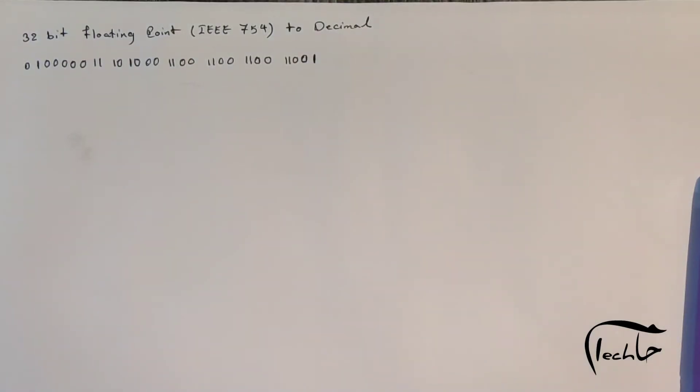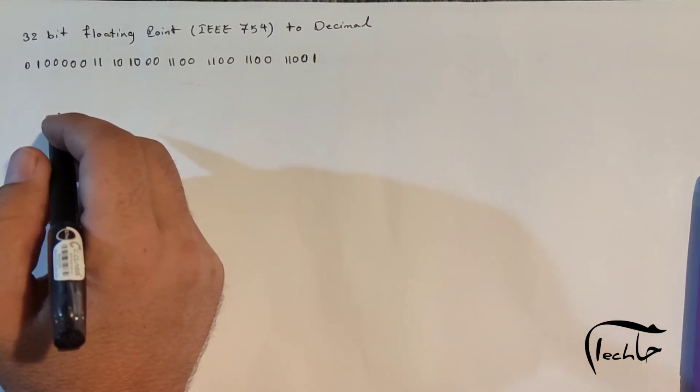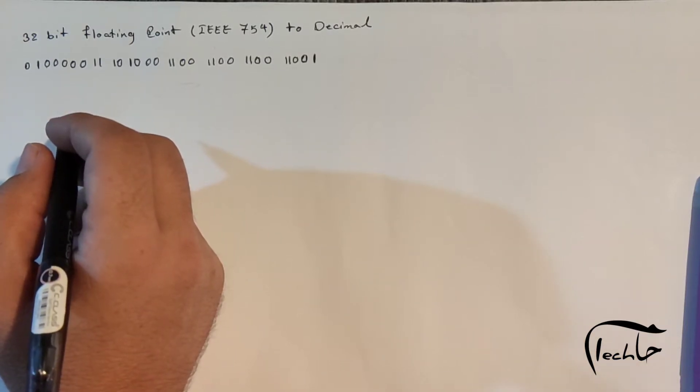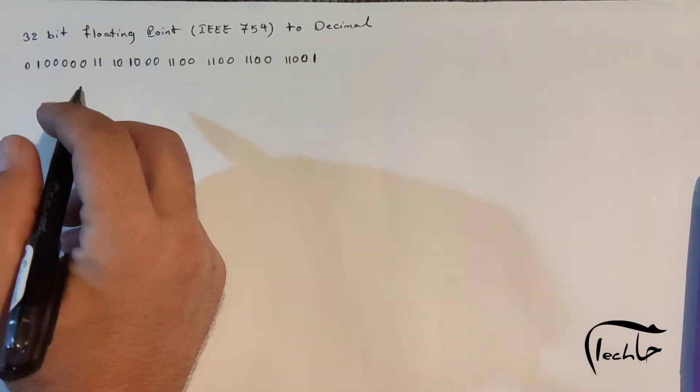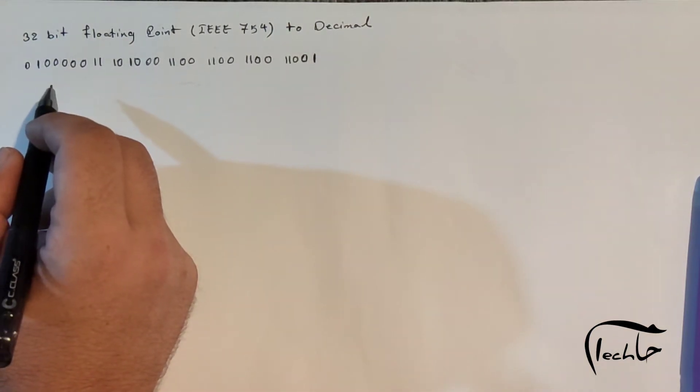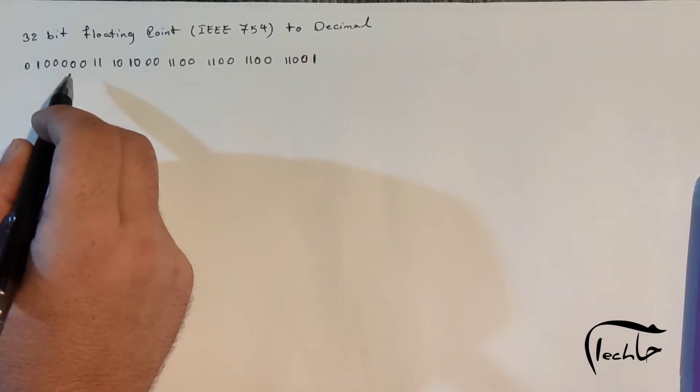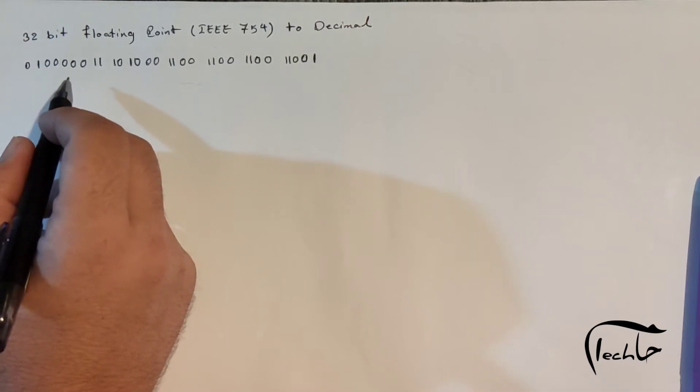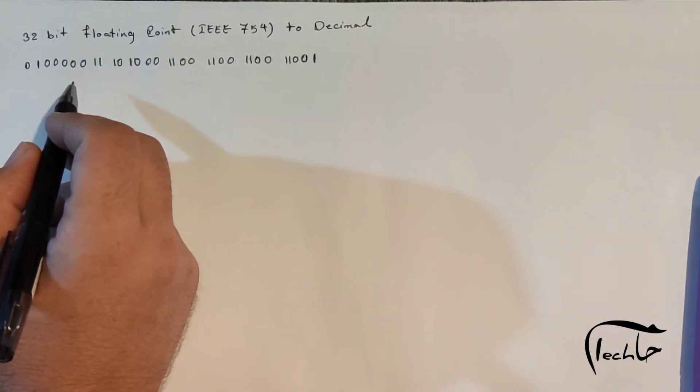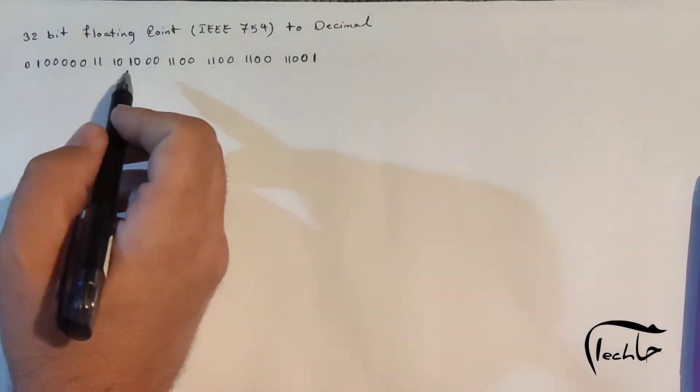Hello guys, my name is Hami and I am here to explain how to convert IEEE 754 32-bit floating point notation to its decimal equivalent. I have an example that I obtained in the previous part of this series. This is 32-bit floating point notation in IEEE 754 format. Let's convert this to its decimal equivalent.